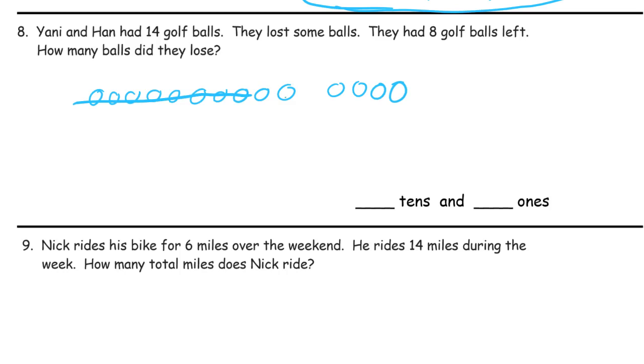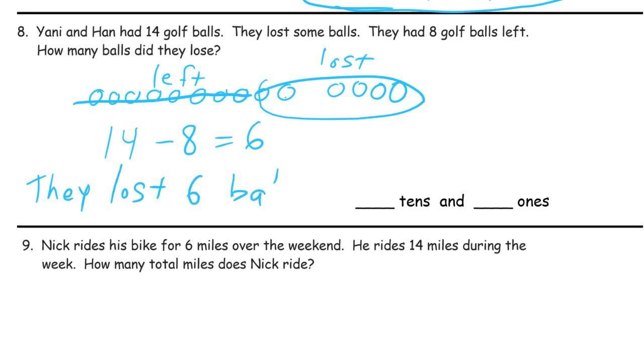That's 1, 2, that's 4, and 2 more. That's 6. So let's label this. These are the 8 that they had left. And these are the ones they lost. So we started out with 14. We subtracted 8. And we had 6 left. They lost 6 balls. And that's 0 tens and 6 ones.